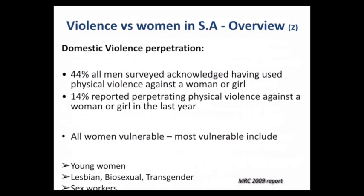All women are vulnerable, but some are most vulnerable: young women are particularly vulnerable to both physical and sexual violence. Sex workers are also vulnerable — there remains a question of whether you're forced to have sex when you don't want to, regardless of the context. Lesbian, bisexual, and transgender women are particularly vulnerable, as are transgender and gay men. In South Africa, there have been incidents of lesbian women being raped by men who view it as an act of violence aimed at stopping them from pursuing that sexual orientation.